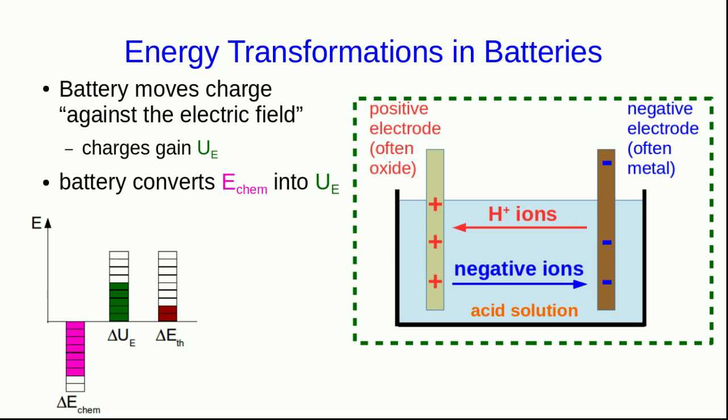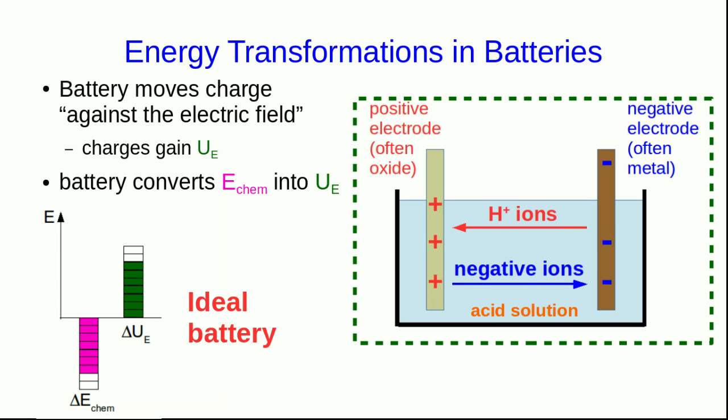In general, like any transformation where we consume source energy like chemical energy, this is an irreversible process, and so there will be some thermal energy produced as well. However, very often in battery operation, that amount of thermal energy is quite negligible, and so we can ignore it. In which case we can talk about an ideal battery.